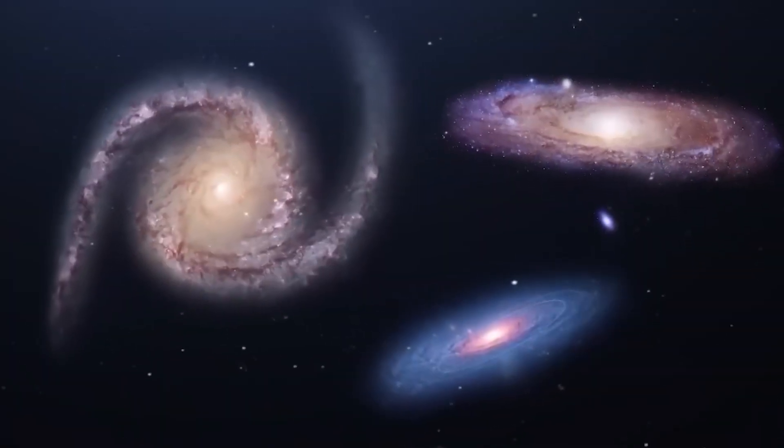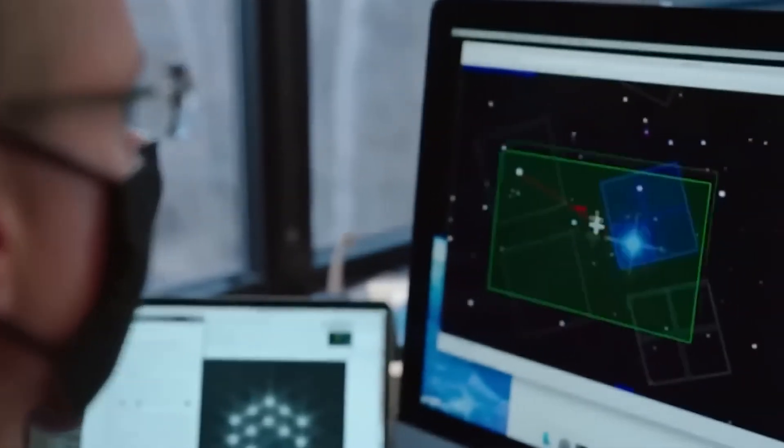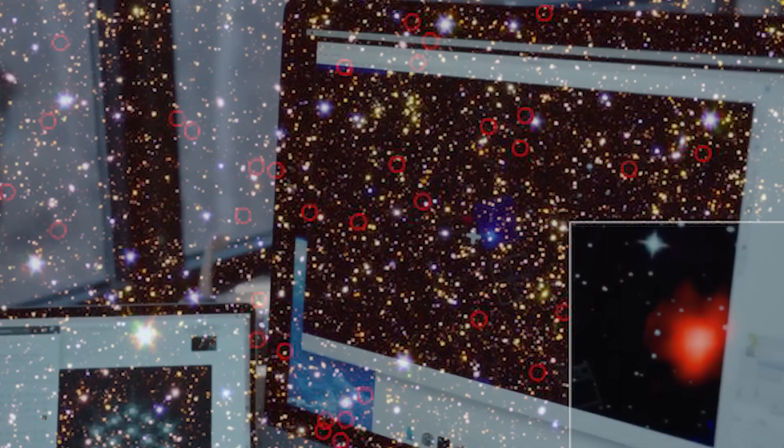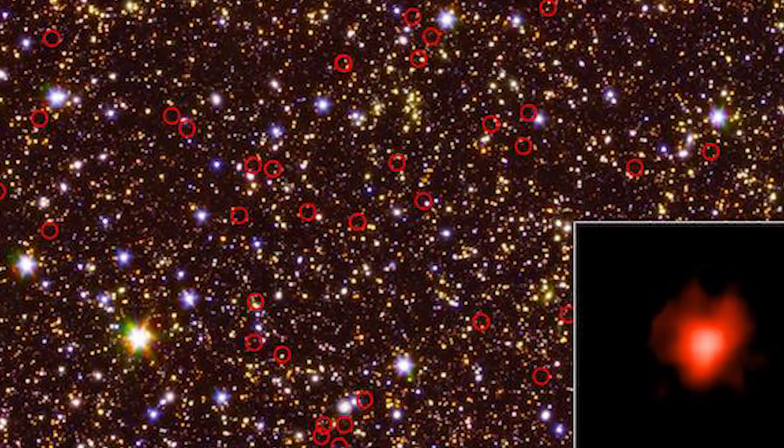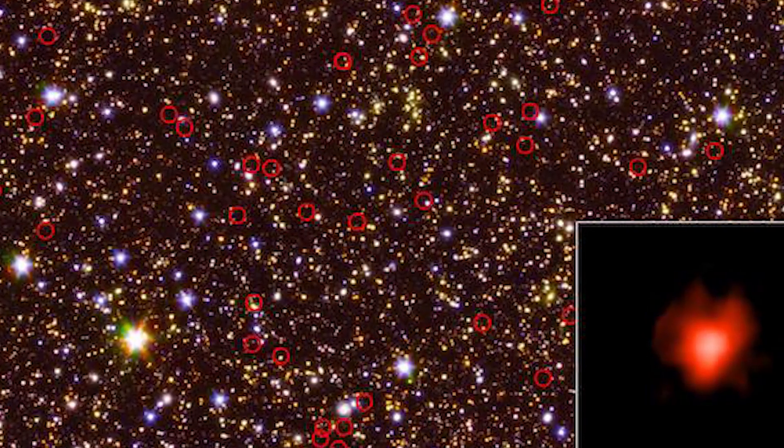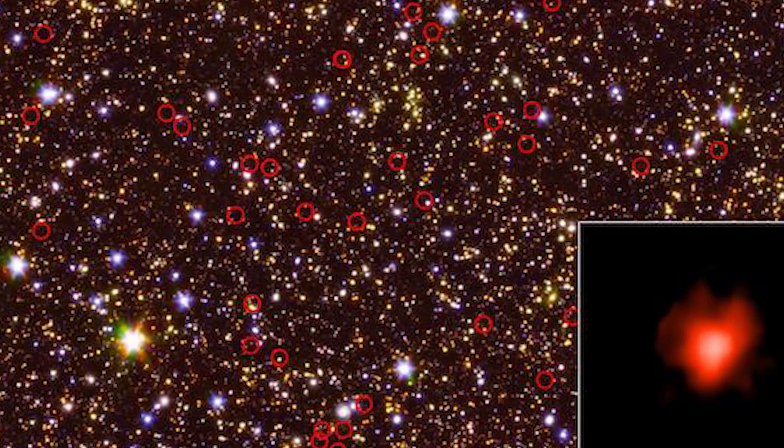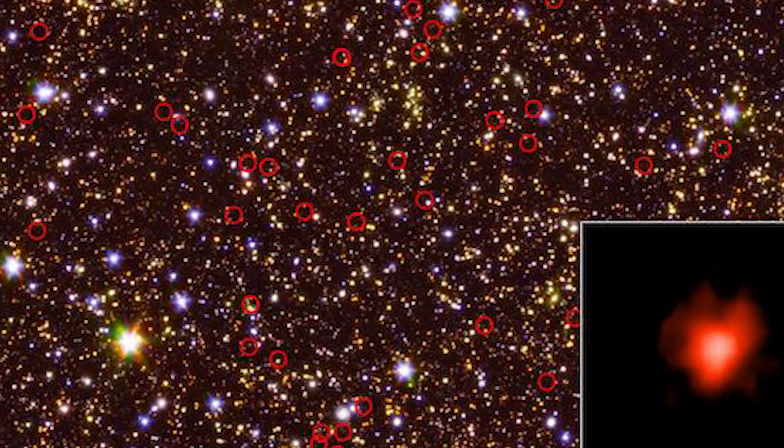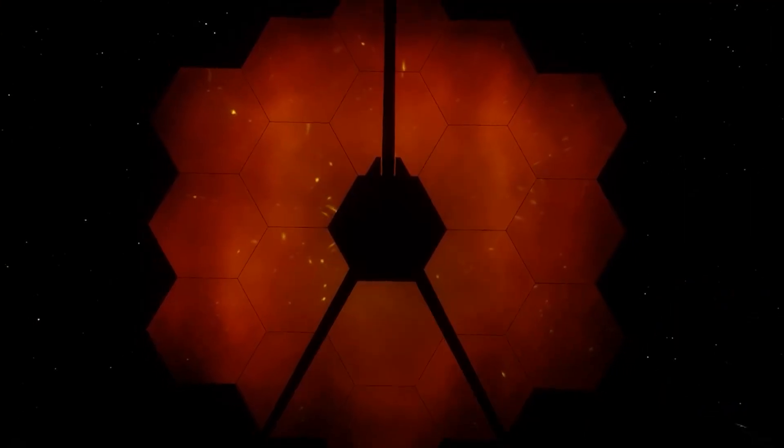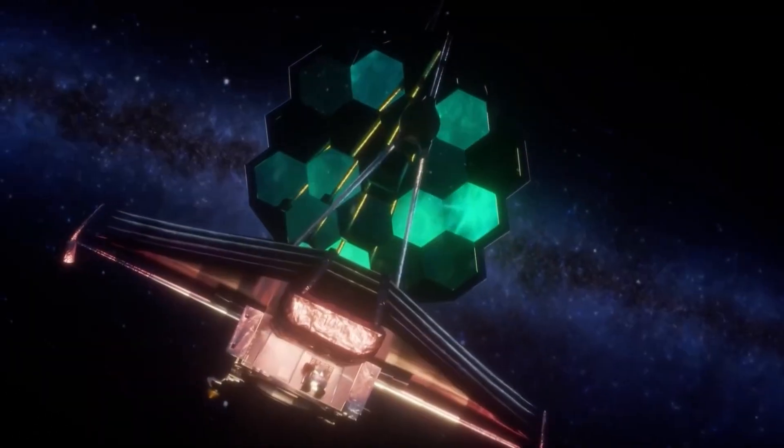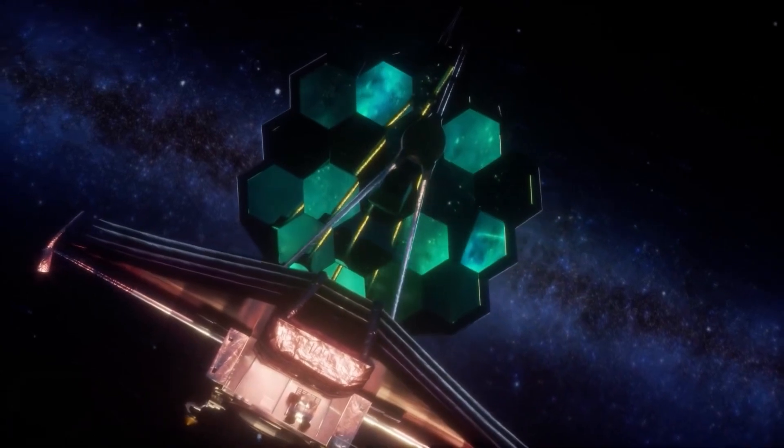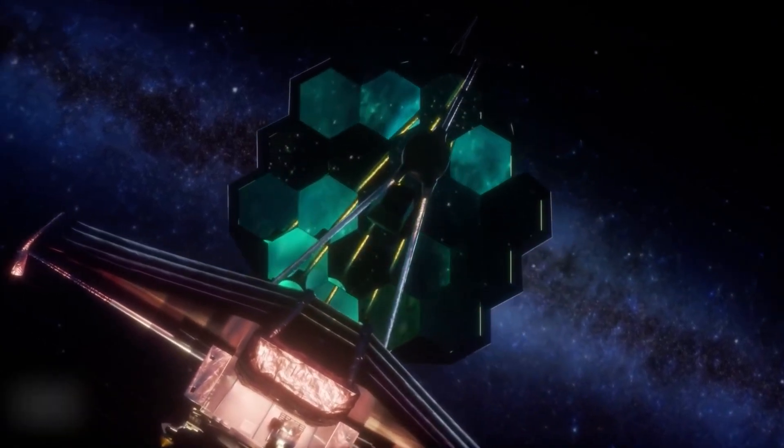Another stunning discovery stumped scientists when researchers found primordial galaxies at the edge of the universe. They were skeptical about their authenticity. Some thought they might be nearby galaxies in disguise, so they shared the data with other scientists around the world hoping for the best. Amazingly, the James Webb Space Telescope confirmed that these ancient galaxies are real. Thanks to this revolutionary telescope, we can now observe the oldest galaxies ever seen.